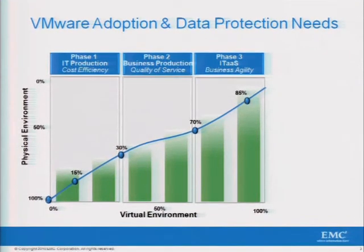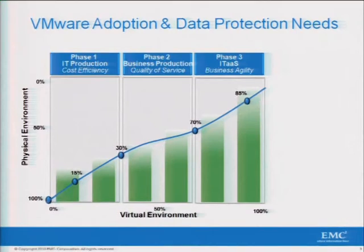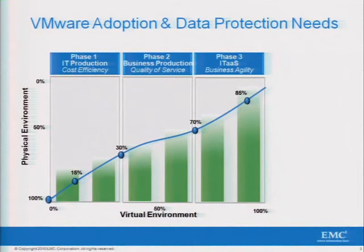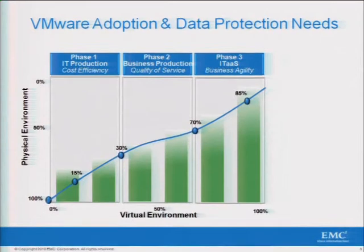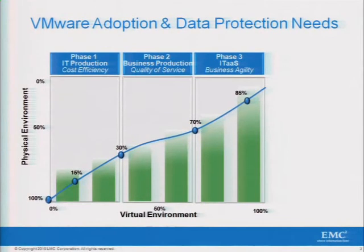You can ask yourself, when you look at this curve, every one of you is in an organization that's somewhere along this journey towards virtualization. On the left side, we have organizations focused on cost efficiency within their IT production environment — virtualizing things like Active Directory, basic file and print services — easy wins, low-hanging fruit, with minimal risk to the business. Organizations using VMware within their dev and test environments and reporting environments represent this great early first phase.